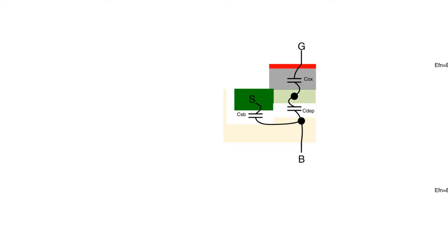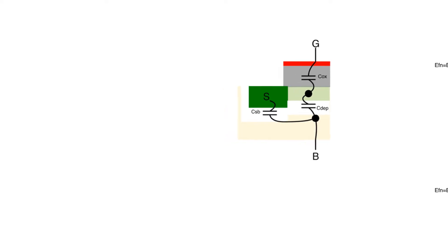If we look at the MOSFET, there's something a little bit odd happening between the gate, the body, and the source. These three terminals are all coupling into the channel. The gate is going to couple to the channel through C-oxide, which is the oxide capacitance. Applying more gate voltage allows the gate to bring more electrons into the channel. The body is also going to couple into the channel through a capacitance formed through the depletion region called C-depletion. This is a normal coupling that we also saw in the MOS capacitor.